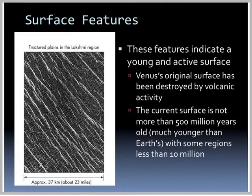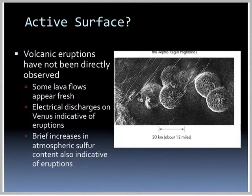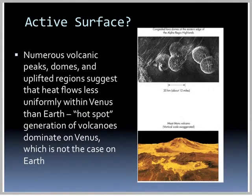Features indicate a young and active surface — Venus's original surface has been destroyed by volcanic activity. The current surface is not more than 500 million years old, much younger than Earth's, with some regions less than 10 million years old. We have not directly observed volcanic eruptions, but we see lava flows that appear fresh, electrical discharges indicative of eruptions, and brief increases in sulfur content also indicative of volcanic activity. Numerous volcanic peaks, domes, and uplifted regions suggest that heat flows less uniformly within Venus than Earth, with hotspot generation of volcanoes dominating.